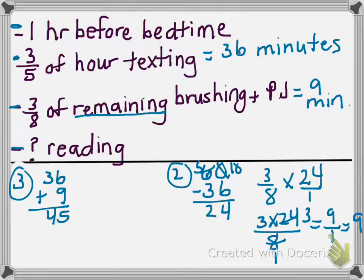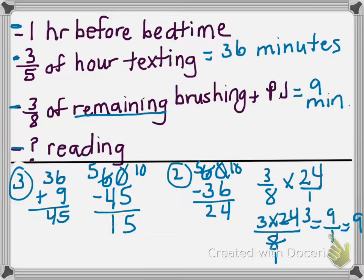How much is left? She's already spent the forty-five minutes texting and brushing her teeth. So let's go back to the hour and take away what she's already spent—sixty, take away forty-five. Again, we need to borrow from our neighbor. Ten take away five is five. Five take away four is one. So how much time did she spend reading? She spent fifteen minutes reading.